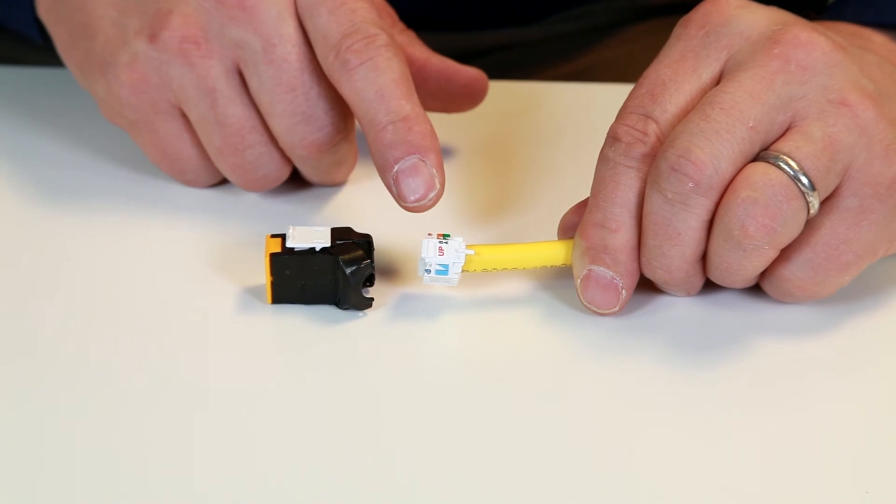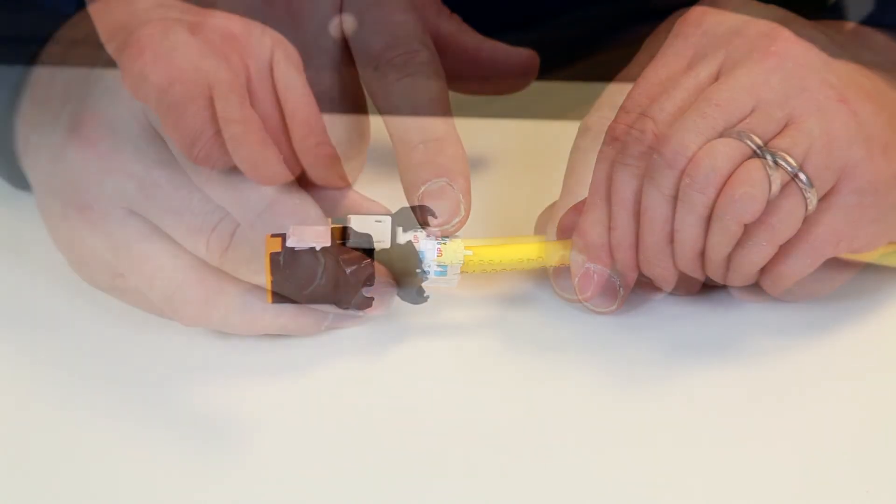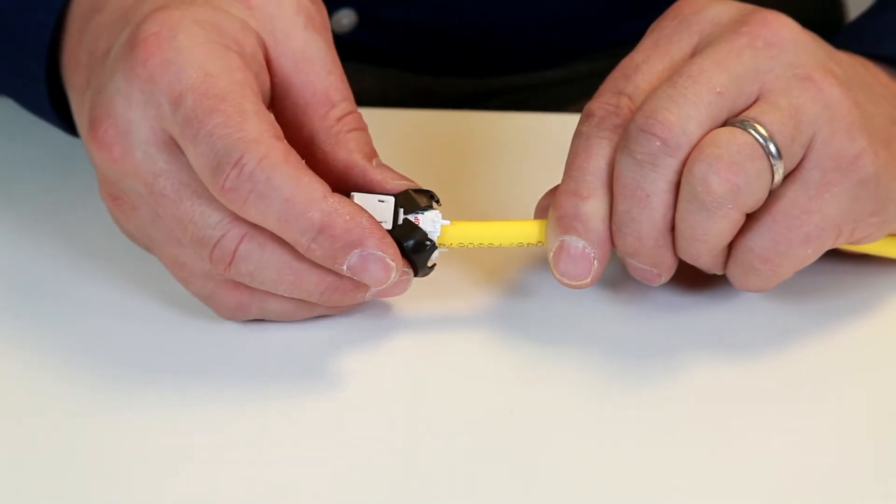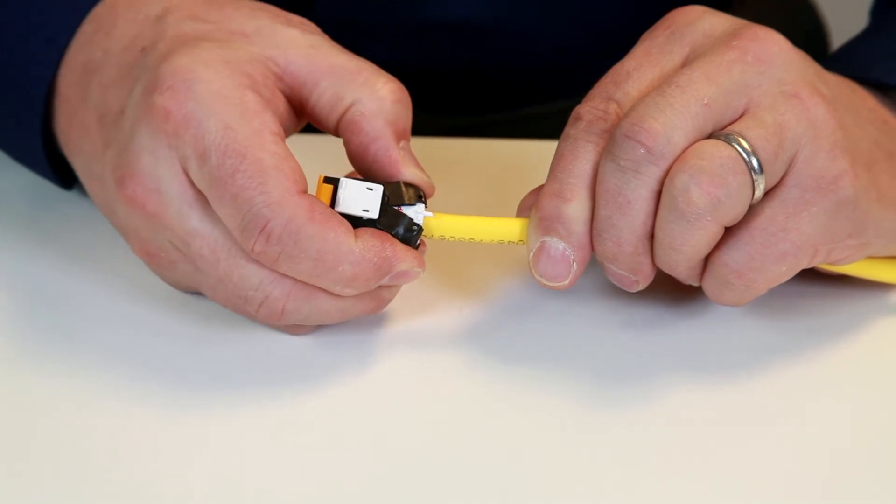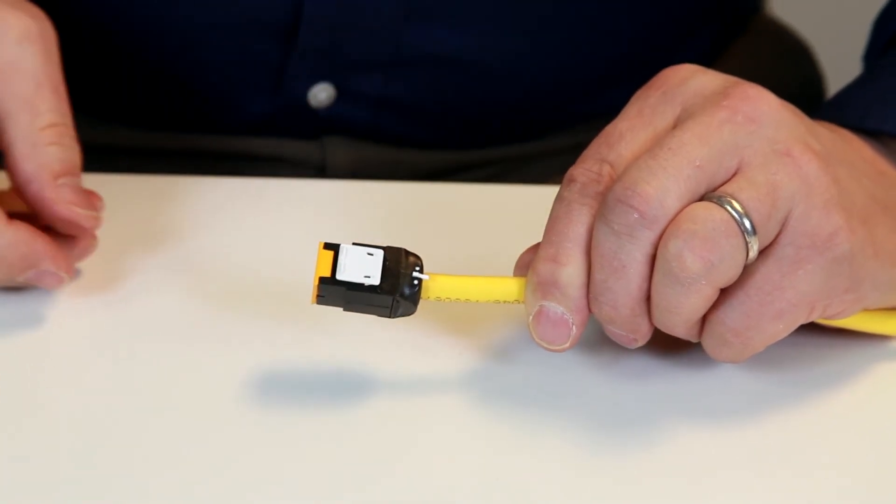We're ready to put the wire manager into the connector now. With that wire manager aligned properly with the back of the jack, simply squeeze the jack doors together and that jack is terminated.